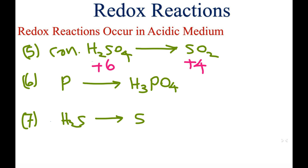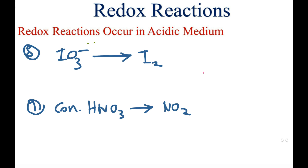In the sixth reaction, phosphorus becomes H₃PO₄. The oxidation state of phosphorus is 0 and becomes +5. In the seventh reaction, hydrogen sulfide gas becomes sulfur: in H₂S, sulfur takes −2 oxidation state, and sulfur's oxidation state is 0, so this is an oxidation half reaction.